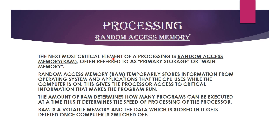The next most important component of processing is Random Access Memory, or RAM, often referred to as primary storage or main memory. RAM temporarily stores information from the operating system and applications that the CPU uses while the computer is on. Any operation or instruction provided to the computer first gets stored into RAM, from where it feeds the information to the CPU for processing. The amount of RAM determines how many programs can be executed at a time, thus determining the speed of processing. RAM is volatile memory and data stored in it gets deleted once the computer is switched off.